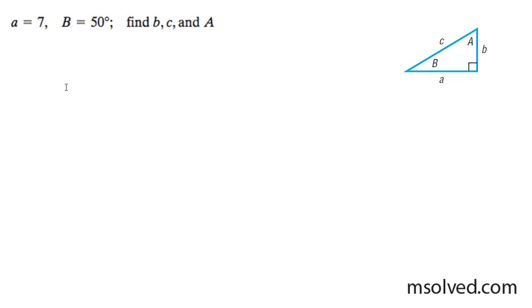Let's find side B, side C, and angle A. So we can go ahead and label here. I know this is 90 degrees of course, 50 degrees, so this means angle A is going to be 40, and I know side A is equal to 7.